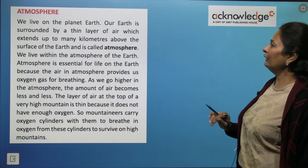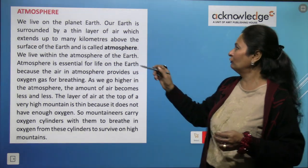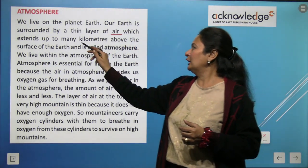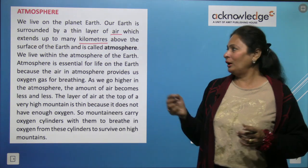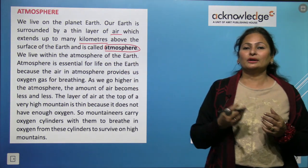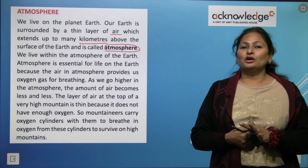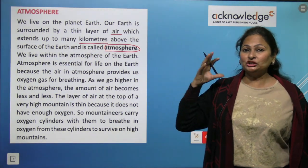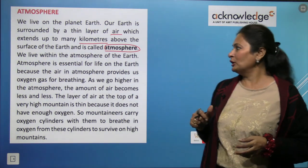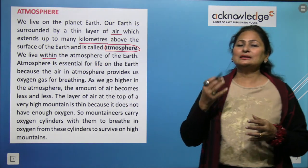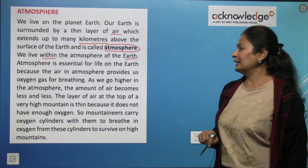Atmosphere: we live on planet Earth, which is surrounded by a thin layer of air extending many kilometers above its surface — this is called the atmosphere. The atmosphere is a layer of mixture of gases that surrounds the Earth. We live within the atmosphere. Atmosphere is essential for life.